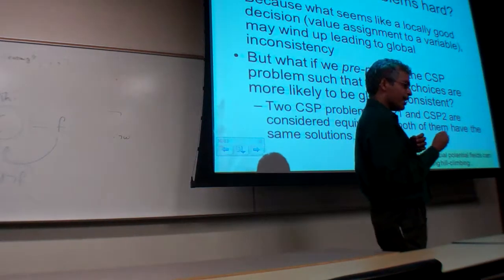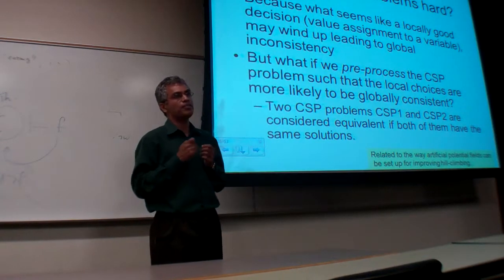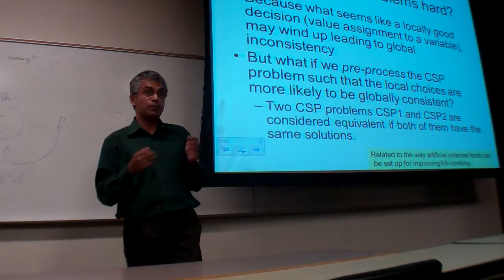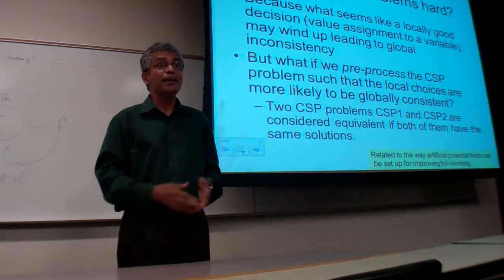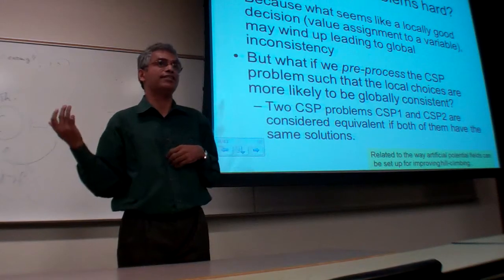So the notion of k-consistency is a useful way to understand when are CSP problems easy to solve. A particular CSP problem may not be n-consistent, but it may be, let's say, three-consistent. So it would be better than not at all being consistent.